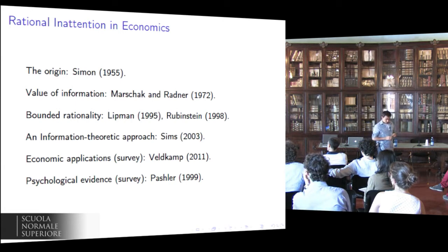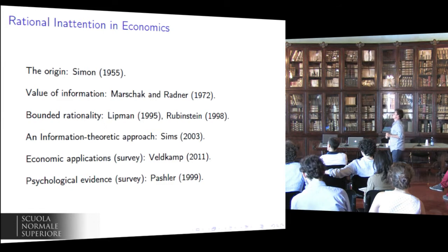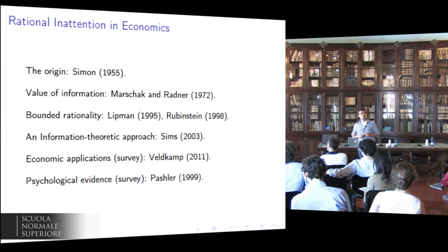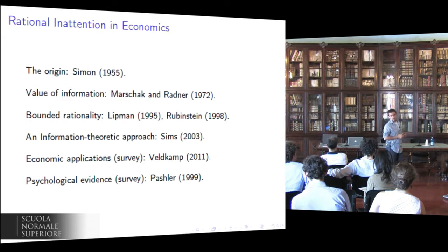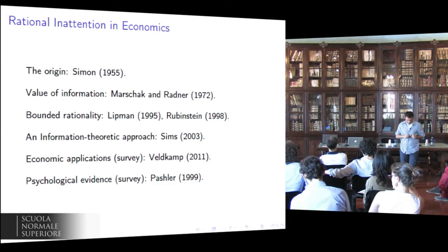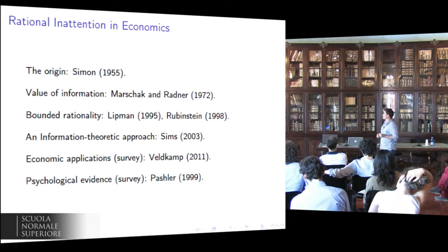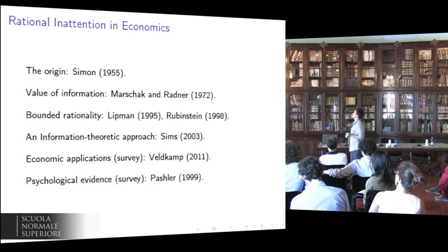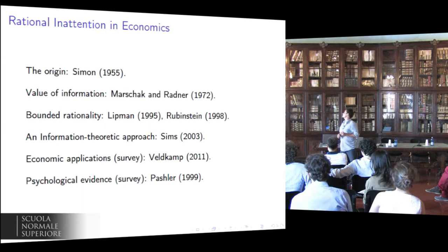In this 2003 paper, Sims does two things. First, he uses the tools of information theory to model rational inattention, therefore providing a tractable framework to think about inattention in economics. And second, he convincingly argues that rational inattention has relevant implications for economics.